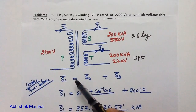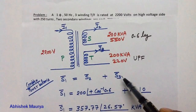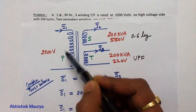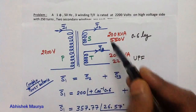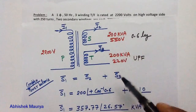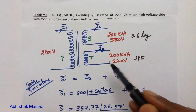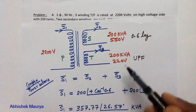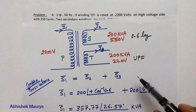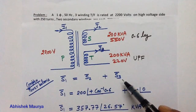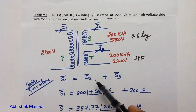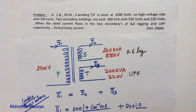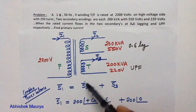So we write: S1 equals S2 plus S3, where S1 is the complex power input at the primary winding, S2 is the complex power output at the secondary winding, and S3 is the complex power output at the tertiary winding. If we are able to write the values of S2 and S3, we can easily find the primary current.